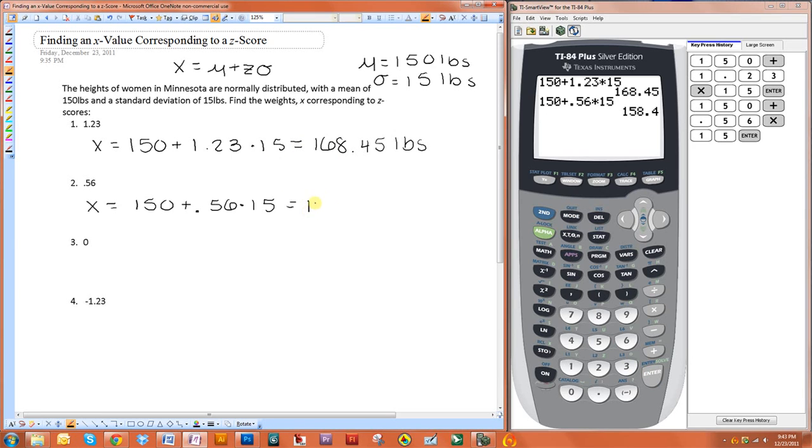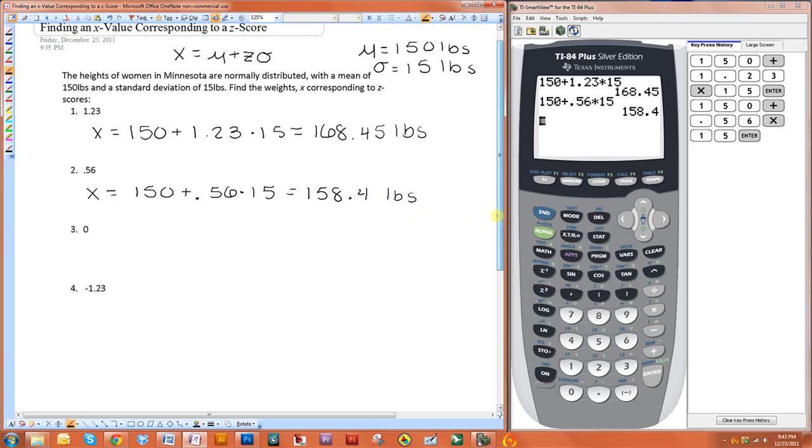The next two are done in the exact same way. Now, whenever you have a z-score of zero, that should be whatever the mean is. So when we plug this into the formula, we should get 150, which was the mean, and we do.